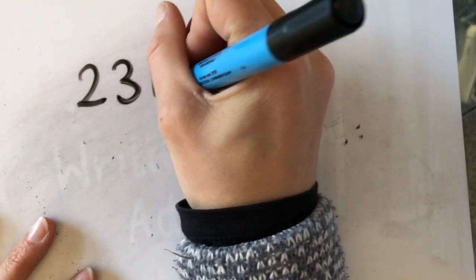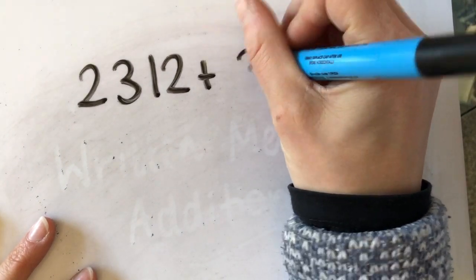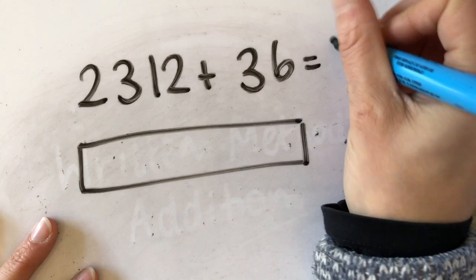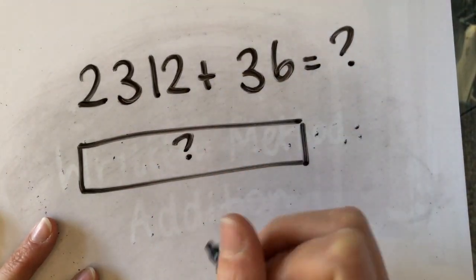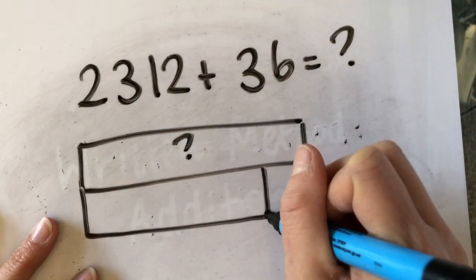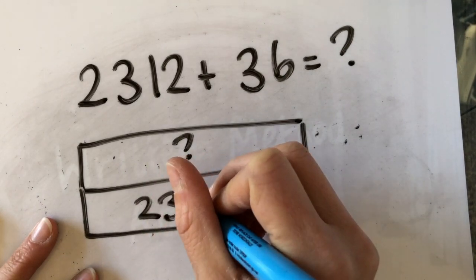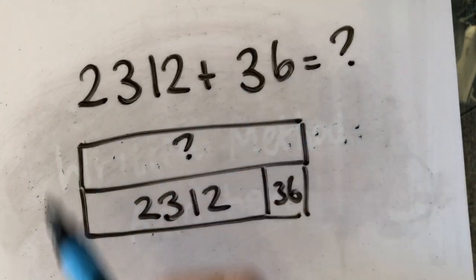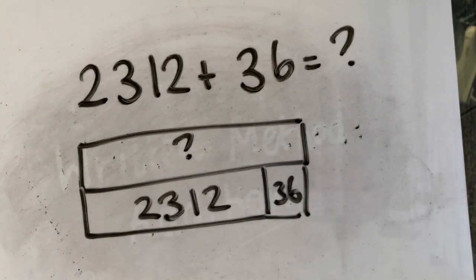2,312 plus 36. You've still got that total because it is that total that is unknown. We know we're adding a really large number, 2,312, and we're adding 36. So it helps us to visualize what that calculation looks like.